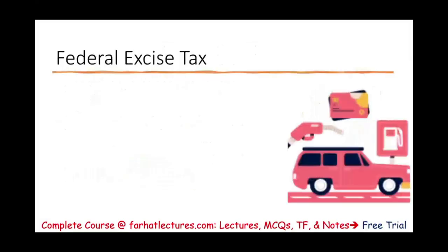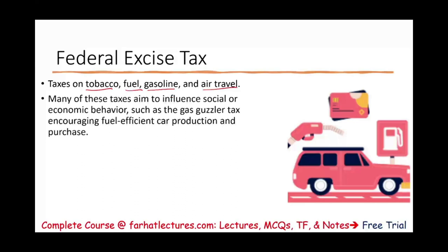One type of transaction tax is excise tax, imposed by the federal government. This tax is usually imposed on tobacco, fuel, gasoline, and air travel. Most of these taxes aim to influence social and economic behavior — for example, taxes on tobacco discourage smoking because it's not good for the healthcare system. The gasoline tax encourages fuel-efficient cars and public transportation, and also helps maintain highways. Air travel taxes relate to safety. State and local excise taxes often mirror federal ones.